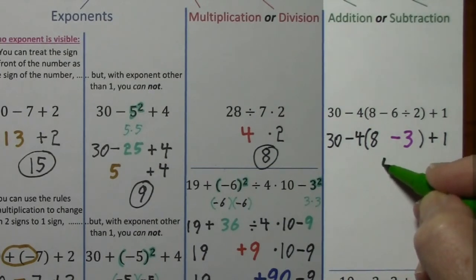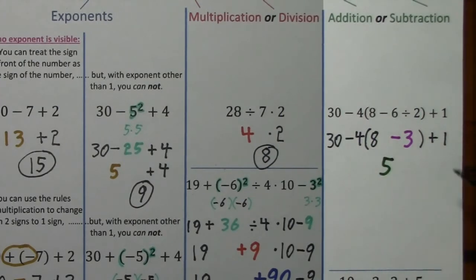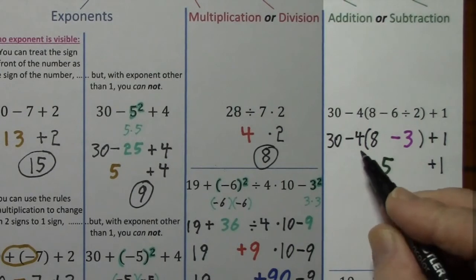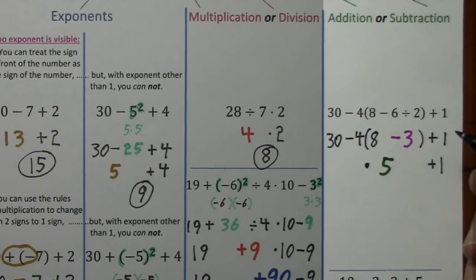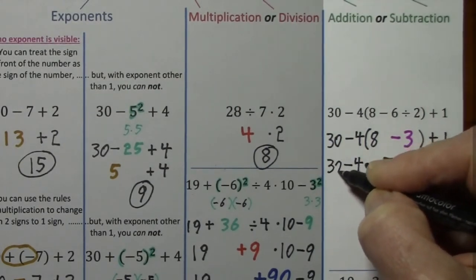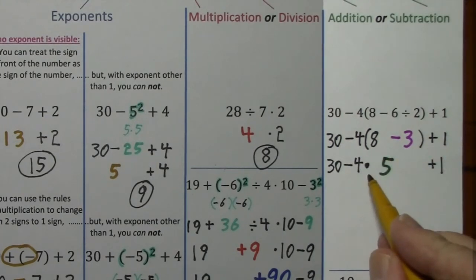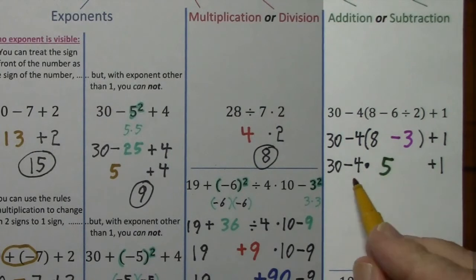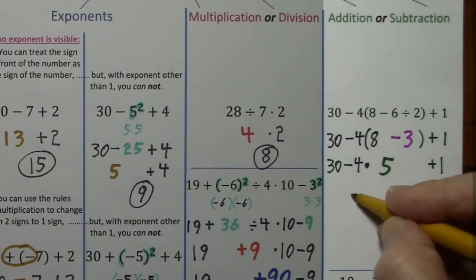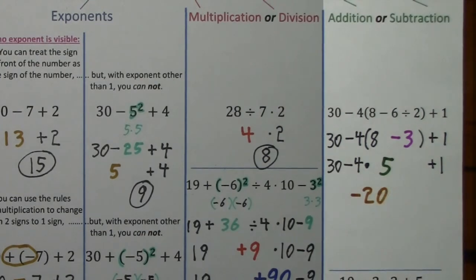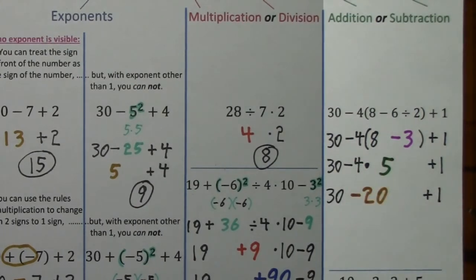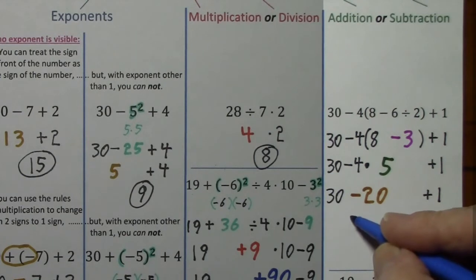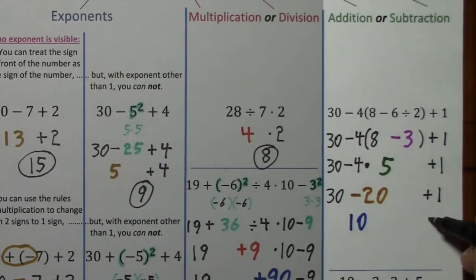Bring down what I haven't touched. This negative 4 is waiting to multiply, so I put a dot to indicate multiplication. We have to take care of multiplication before addition or subtraction: negative 4 times positive 5. Bring down what we haven't touched. Here the signs are different — we subtract, keep the sign of the larger. Bring down this very patient 1, and finally we get the answer.